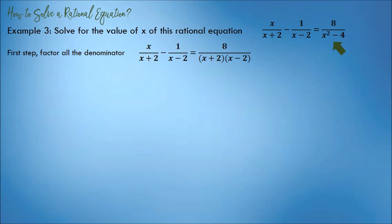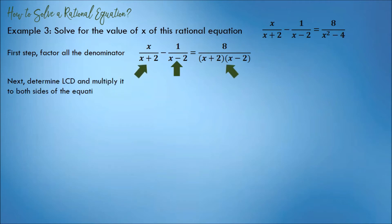Review the topics of factoring. Next, determine the LCD and multiply it to both sides of the equation. In this case, the denominators are (x plus 2), (x minus 2), and (x plus 2) times (x minus 2). Their LCD is (x plus 2) times (x minus 2), because it can be divided by (x plus 2), it can be divided by (x minus 2), and it can be divided by itself.